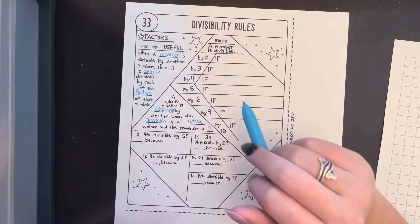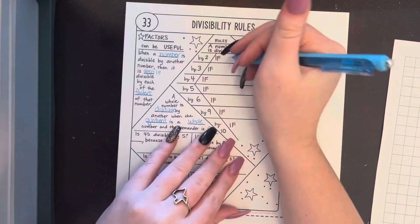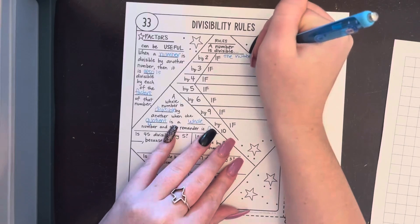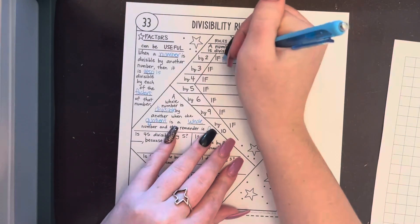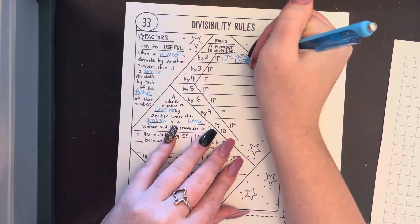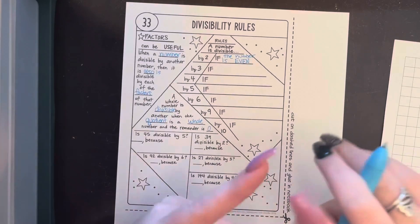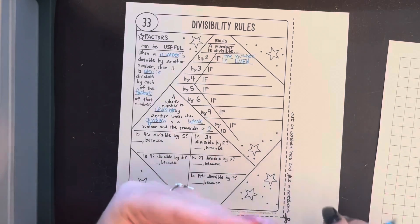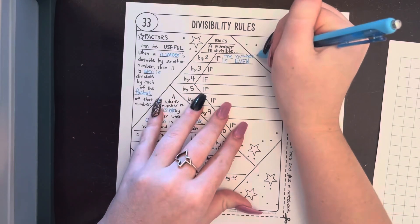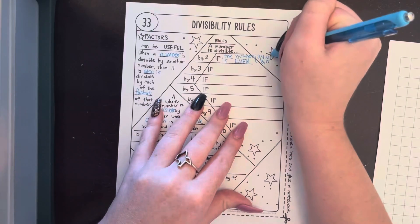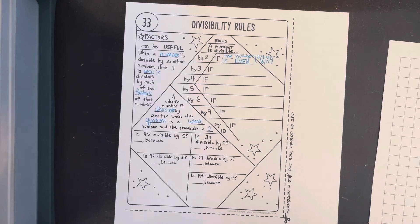A number is divisible by two if the number is even. So remember our even numbers end in zero, two, four, six, or eight. Let's write these down so we remember them.